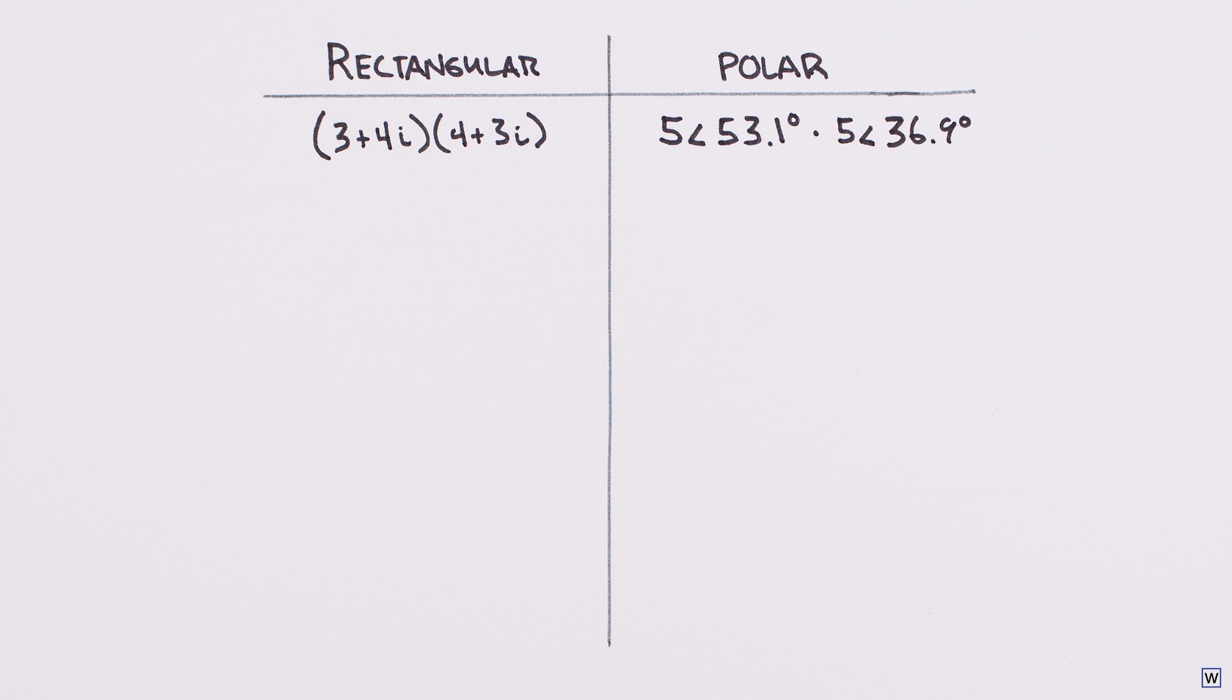Multiplying complex numbers in polar form is super easy. We just multiply the magnitudes and add the angles.